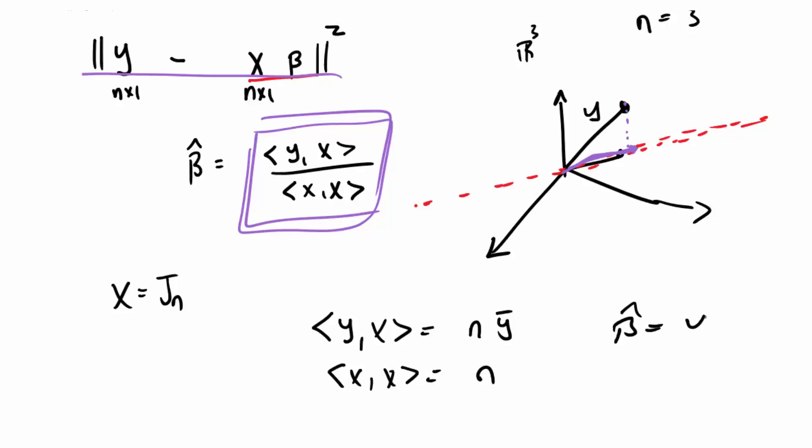So beta hat works out to be y bar in that special case. So we haven't changed anything from our previous lecture. If x happens to be a constant, we still arrive at the same answer, of course.